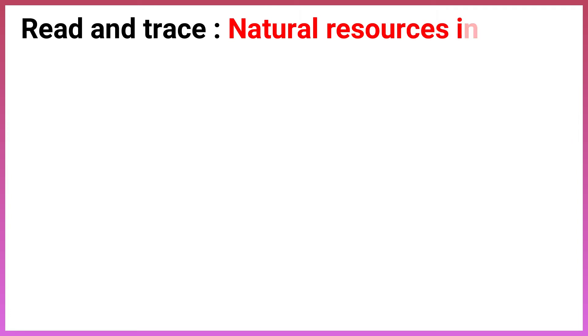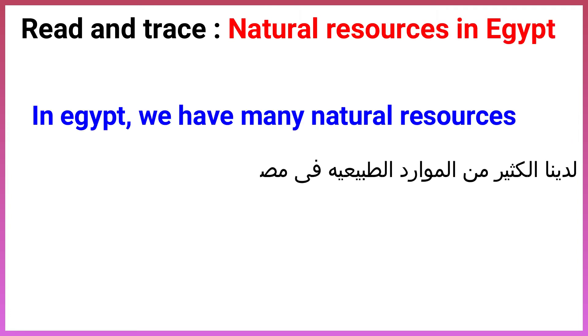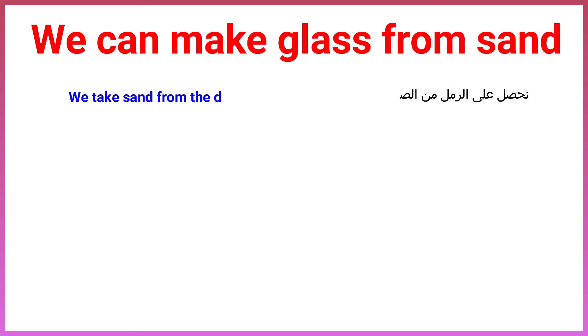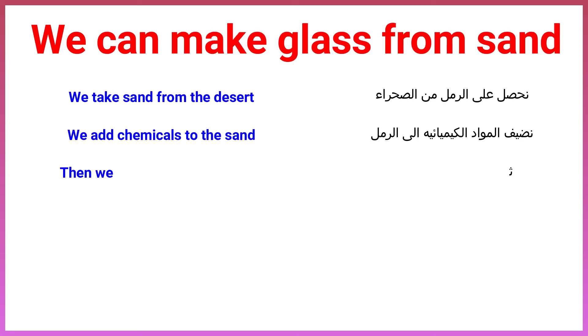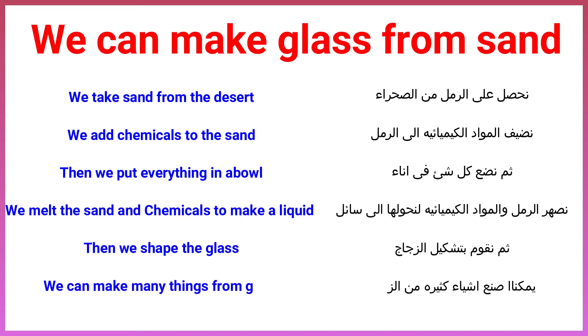Read and trace. Natural resources in Egypt. In Egypt we have many natural resources. Sand is a natural resource. We can make glass from sand. We take sand from the desert and we add chemicals to the sand.